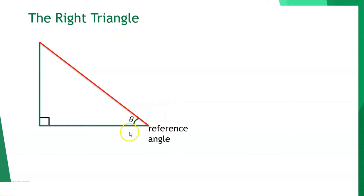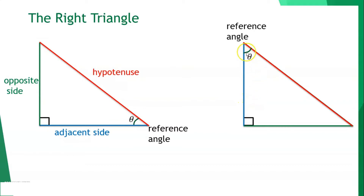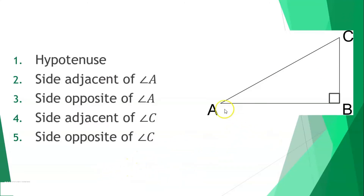Given a right triangle, when the reference angle is at the bottom, the side across it is considered the opposite side, and the side connected to that angle is the adjacent side. The side opposite the right angle is the hypotenuse. The same applies if the reference angle is at the top.